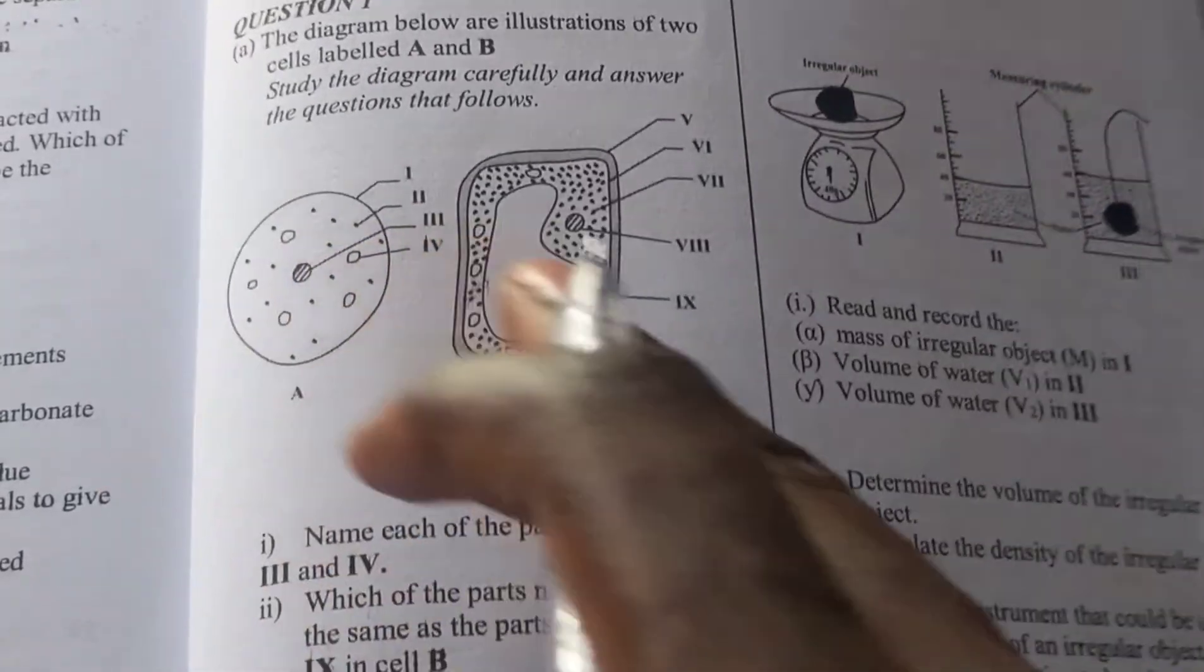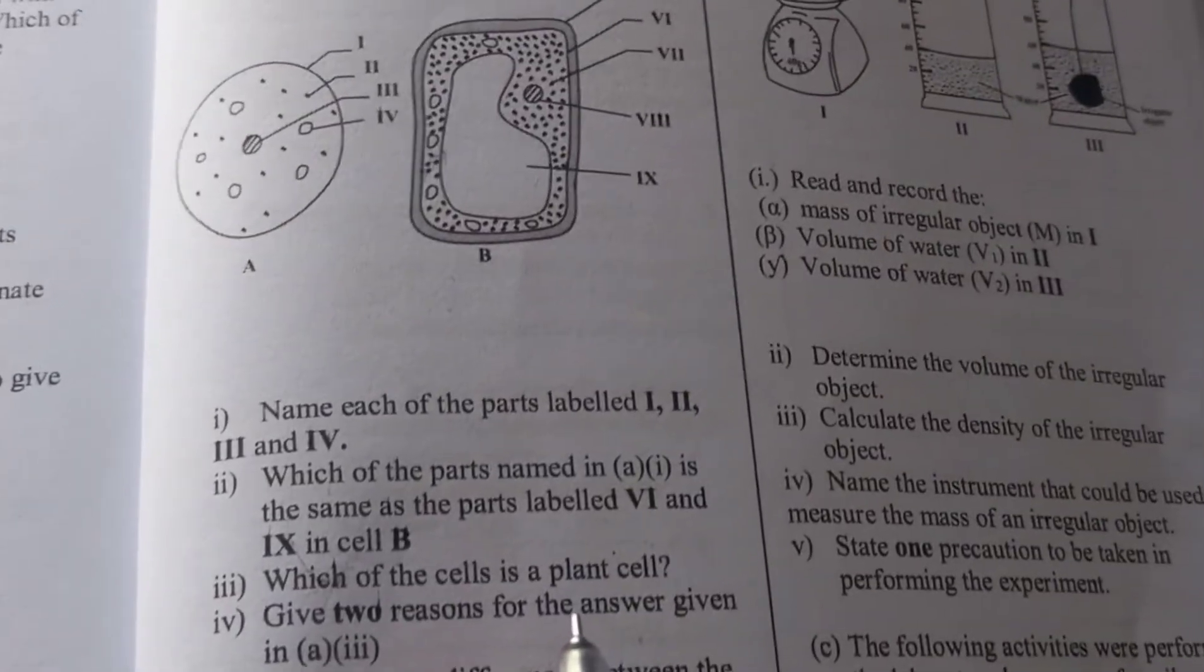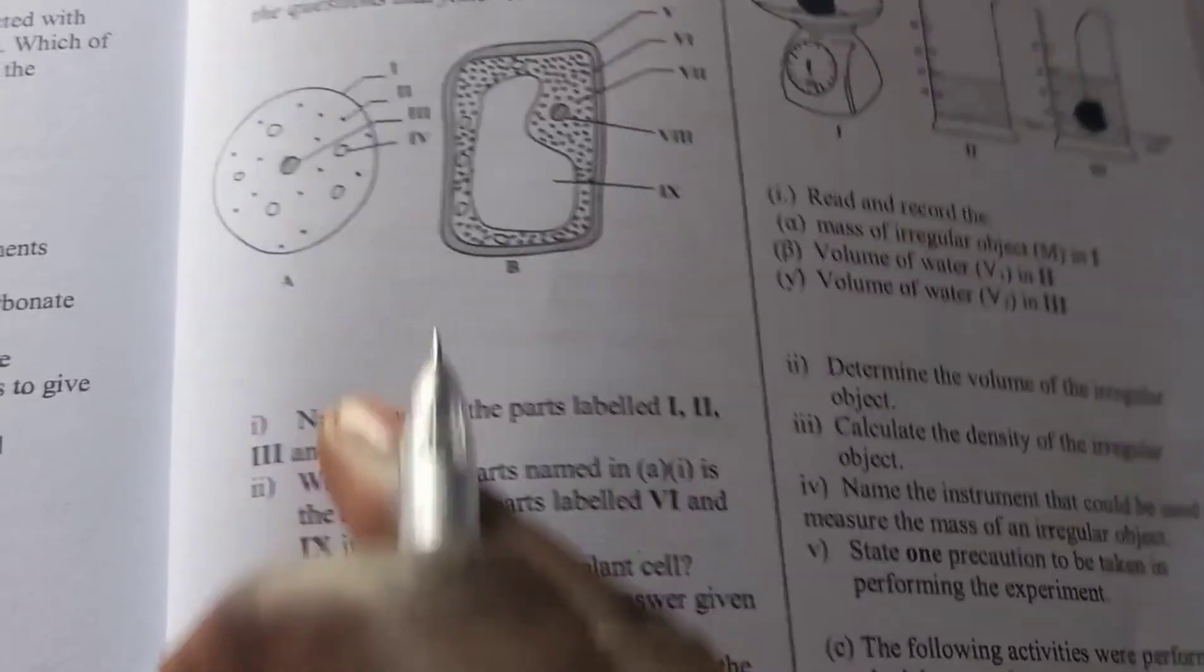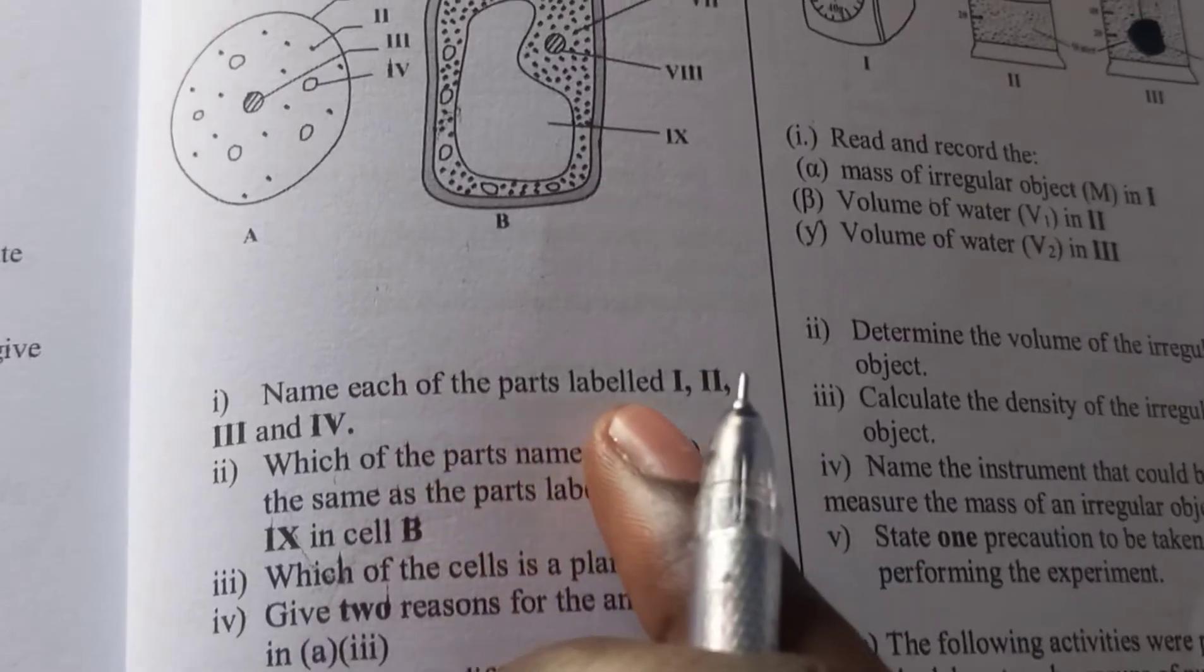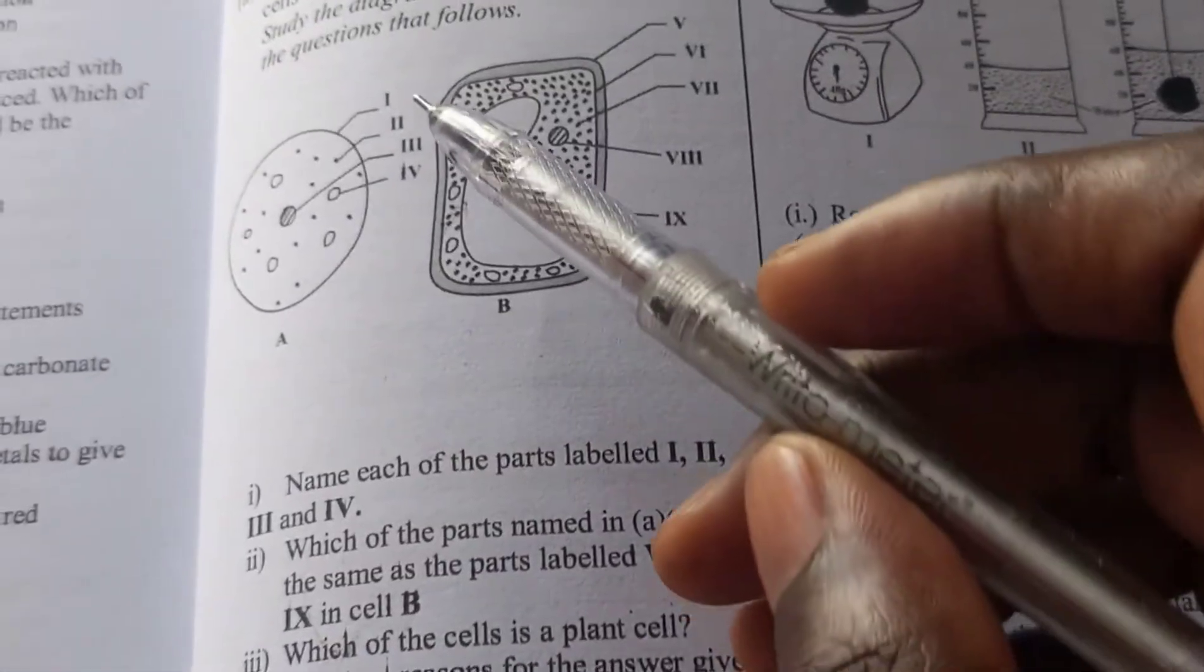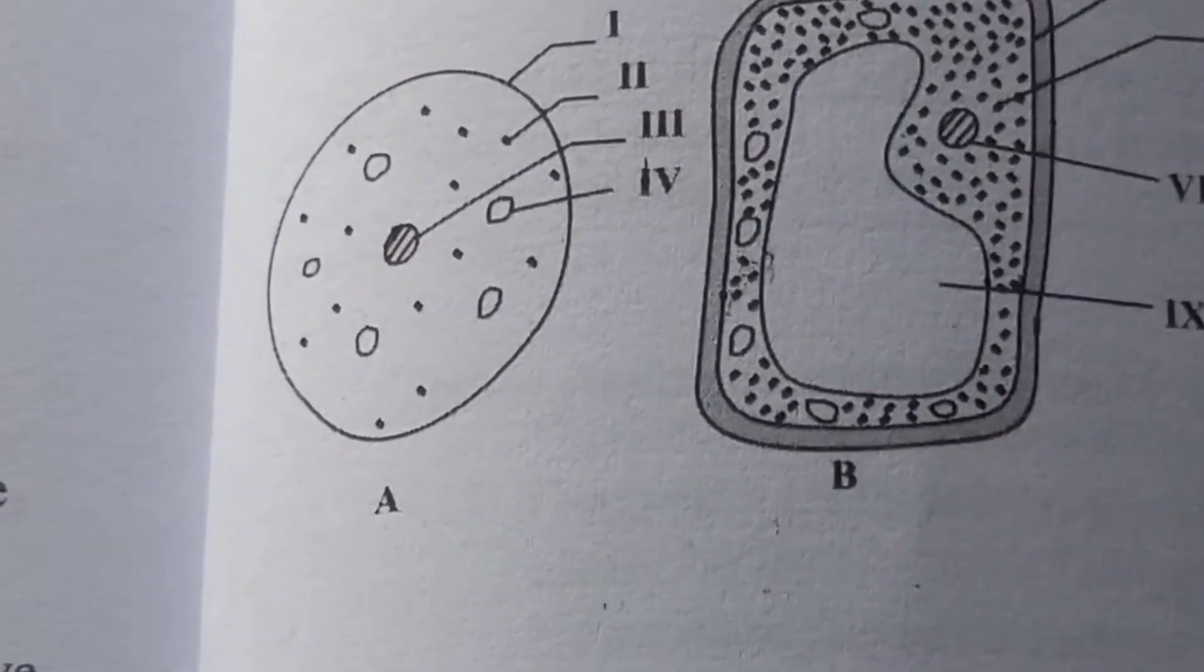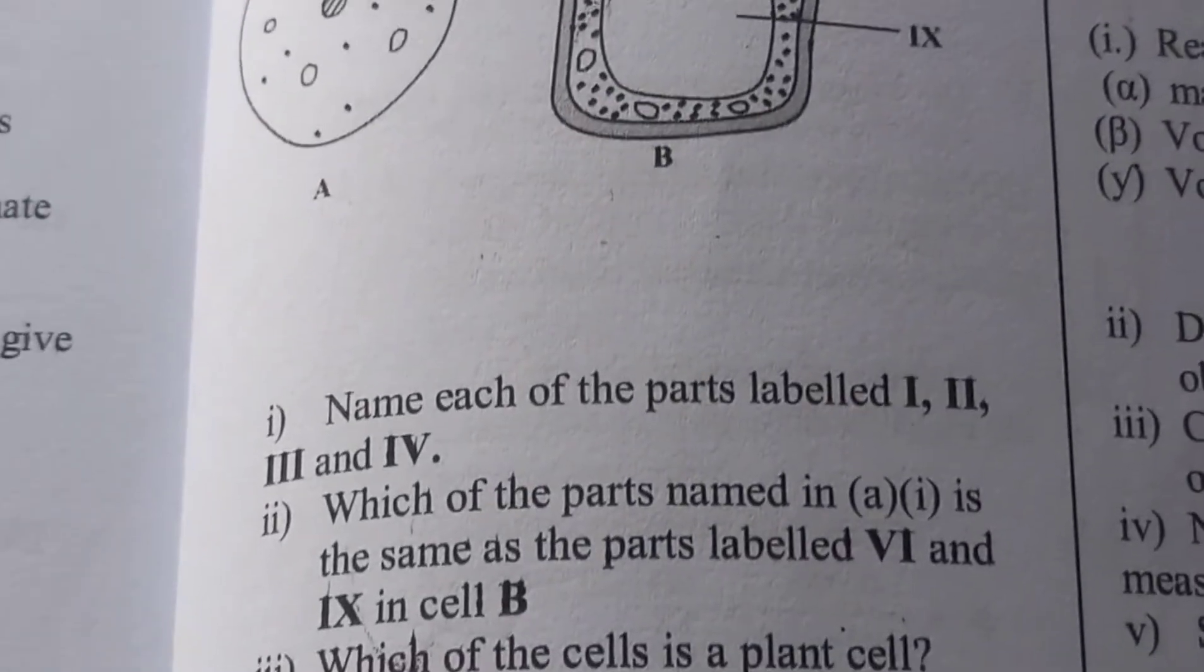So I'm going to label everything very easily, but there are some questions here I want to focus on. This is question 1a(i), and they will say name each of the parts labeled I, II, III, and IV. That is easy - you just look at the pattern and name it. We will do that later.